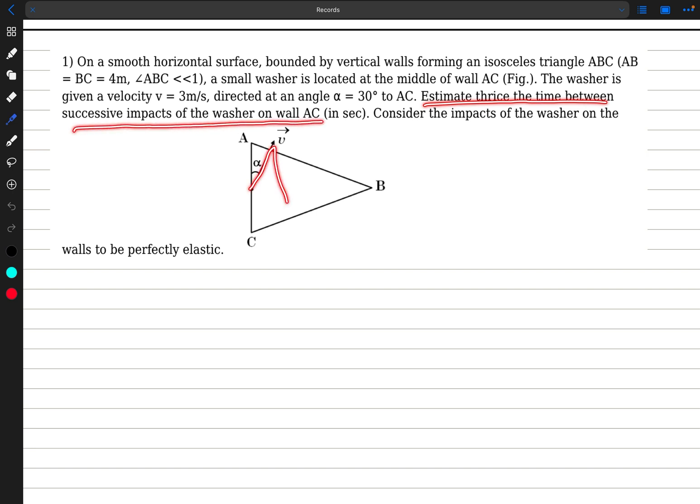Estimate thrice the time between the successive impacts of washer on the wall AC. So this washer will collide and after some time it will come back and hit AC. We need to find the time difference or the time taken for this process. And it's mentioned that consider the impacts of the washer on the walls to be perfectly elastic.